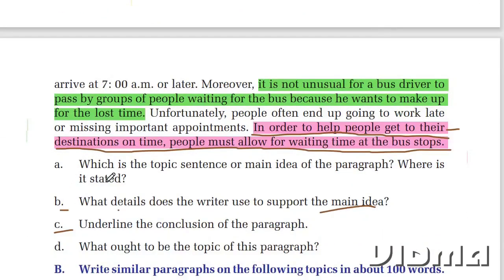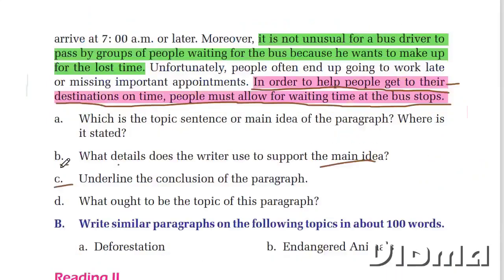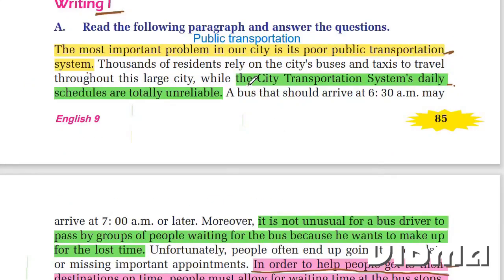Question 1: Which is the topic sentence or main idea of the paragraph? The first sentence is the topic sentence or main idea of the paragraph, and it is stated at the beginning. Question 2: What details does the writer use to support the main idea? The writer has used the following details to support the idea: first, the city transportation system's daily schedules are totally unreliable; second, it is not unusual for a bus to be lost or delayed.